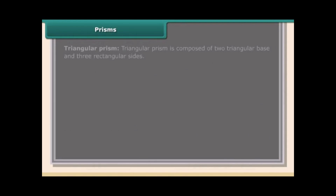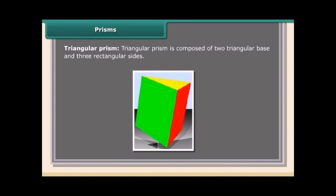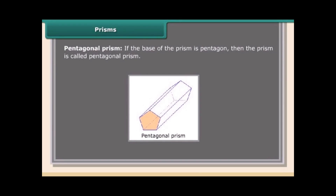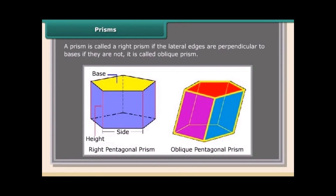Prisms are classified according to their bases. A triangular prism is composed of two triangular bases and three rectangular sides. If the base of the prism is a pentagon, it is called a pentagonal prism. A prism is called a right prism if the lateral edges are perpendicular to the bases; if they are not, it is called an oblique prism.